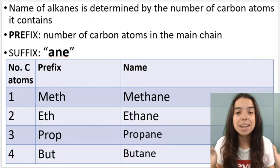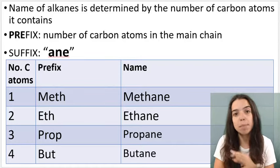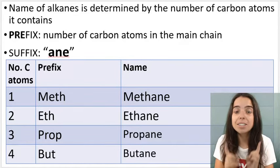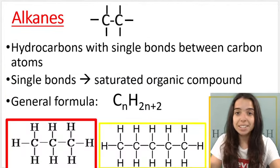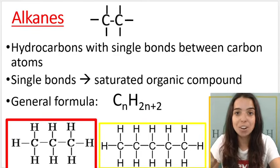When it comes to naming alkanes we use the IUPAC method and this is what we use for naming all organic compounds. I'm going to first focus on naming straight chain alkanes. So what do I mean by straight chain alkanes? These alkanes here on the screen are straight chain alkanes. They have no side branches.